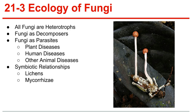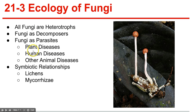Section 21-3, ecology of fungi: all fungi are heterotrophs, and many are saprobes — organisms that obtain food from decaying organic matter. Fungi play an essential role in maintaining equilibrium in nearly every ecosystem, recycling nutrients by breaking down the bodies and wastes of other organisms. Parasitic fungi cause serious plant and animal diseases. Plant diseases include corn smut, mildew, and wheat rust.